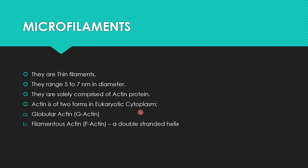Actin exists in two forms in eukaryotic cytoplasm: globular actin, or G-actin, and filamentous actin, or F-actin. Actin is the main component of microfilaments. The filamentous actin is in the form of a rope, or what we can describe as a double-stranded helix.